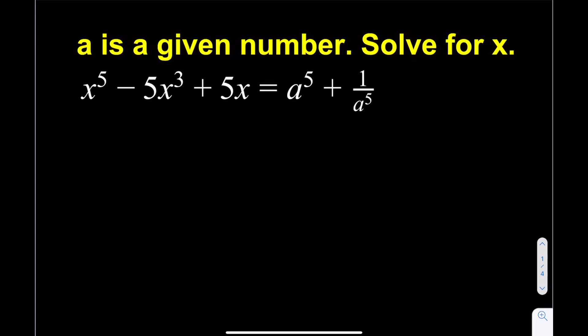We're going to use a change of variables. I'm going to define x as y plus 1 over y. Then I'll square both sides, getting y squared plus 1 over y squared. When you square that expression you also get a 2 in the middle, so subtracting that gives x squared minus 2.